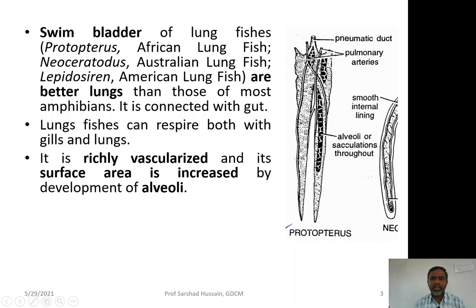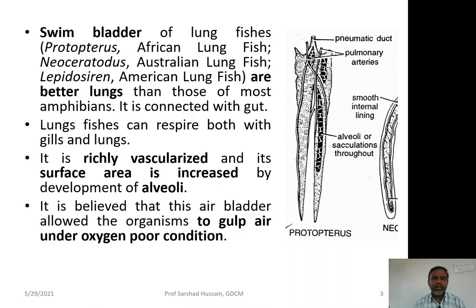These air bladders act as lungs because they are richly vascularized with a good supply of blood. Their surface area is also increased with the development of alveoli structures inside them. That is why these air bladders are not exactly similar to the air bladders of other fishes, which are neither vascularized nor have alveoli inside them.